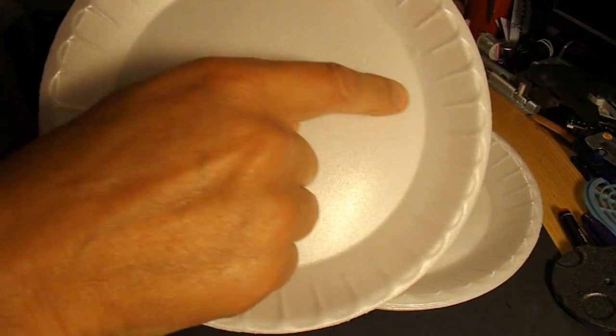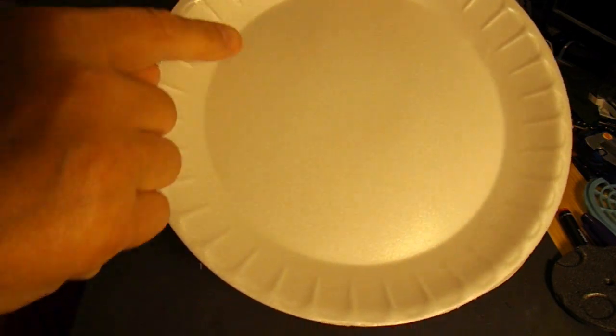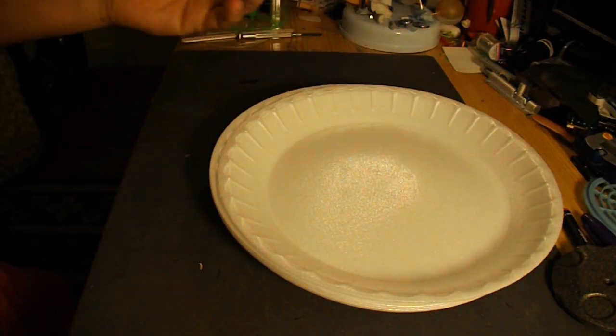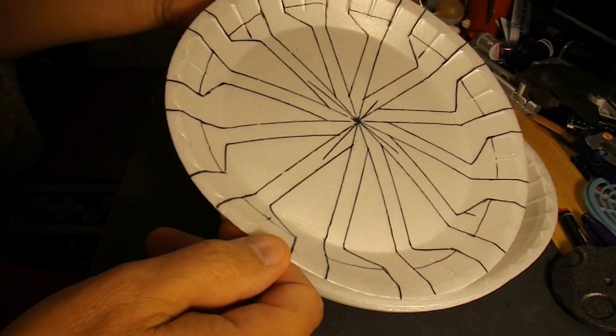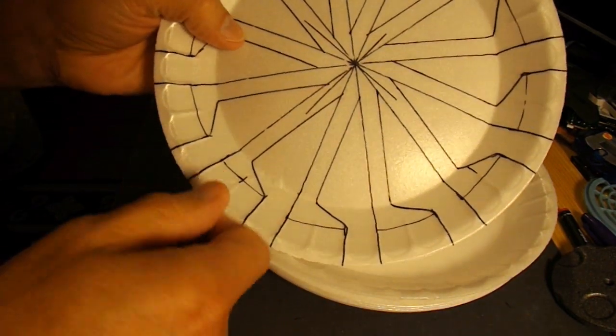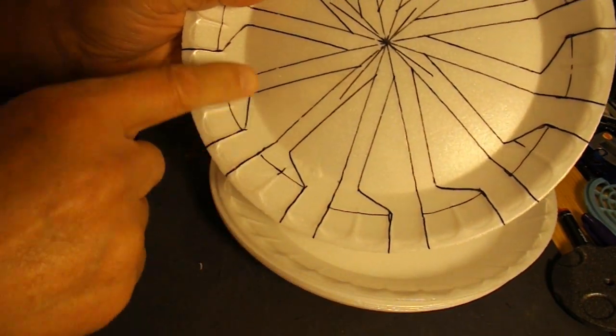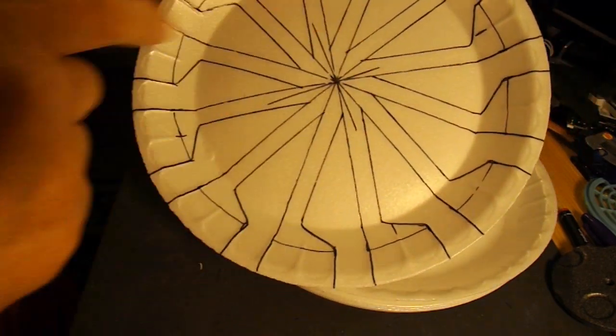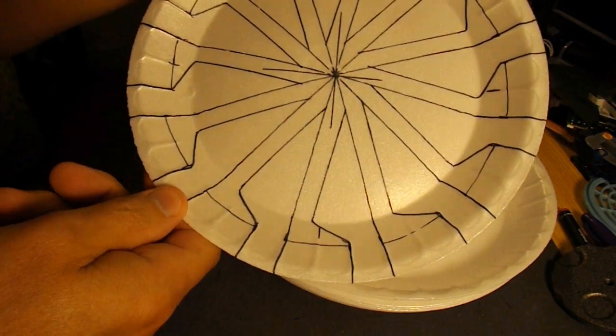These plates have got convenient markings all the way around. So here's one I've already marked up. I shall cut it out so it's got these little feathery wings or rotors.